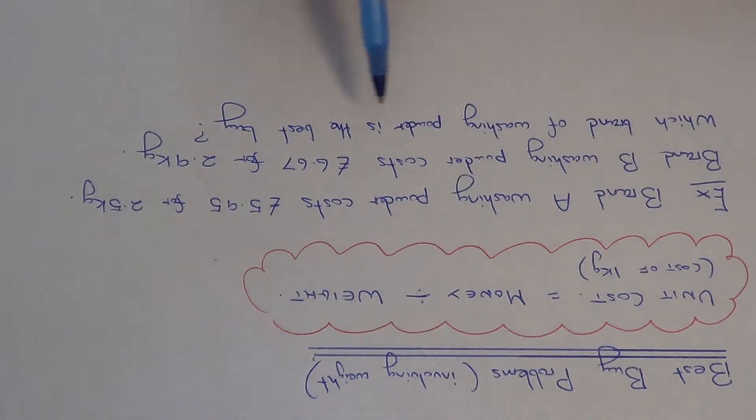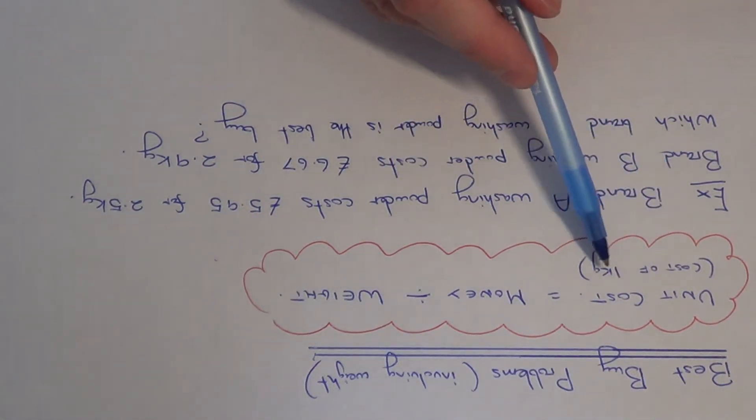So which brand of washing powder is the Best Buy? The best way to solve this problem is to work out the unit cost, and that is working out the cost of one kilogram of washing powder. And you can do this using the formula which I've put at the top here.